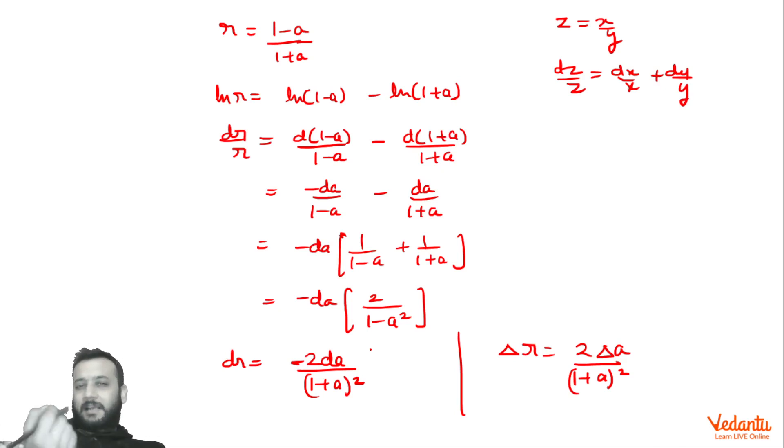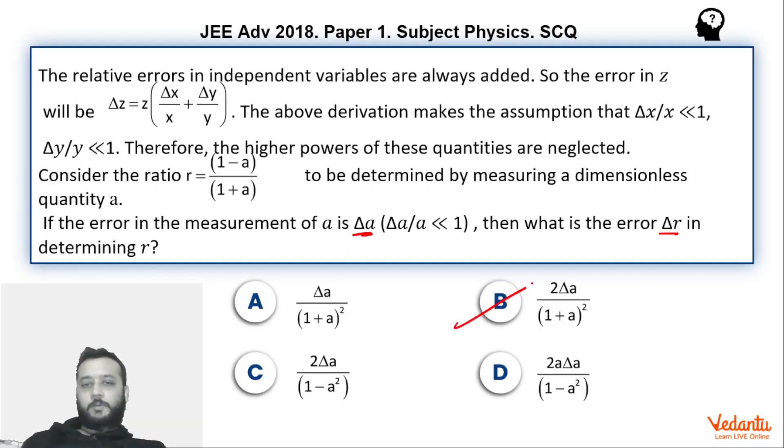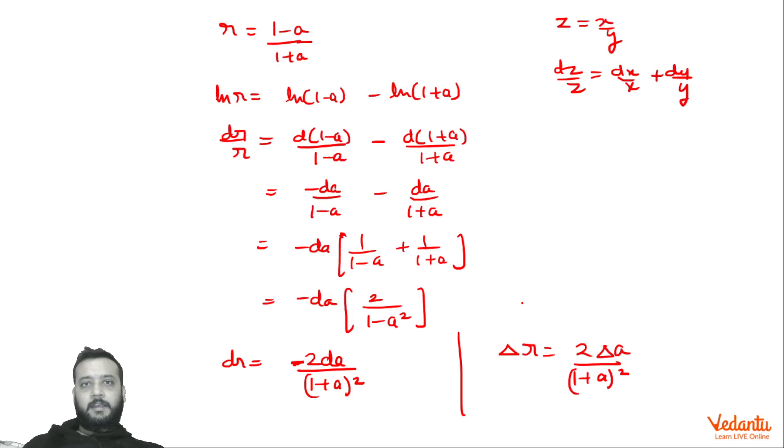Therefore, in general, the magnitude of error has to be calculated. This minus sign is just telling that if a increases, then r will decrease. Whereas if we say error in r, then we can say its magnitude, and hence we can say 2 delta a upon (1+a)², this is our answer, which is option B. So that's it. I hope you would have understood. Thank you.